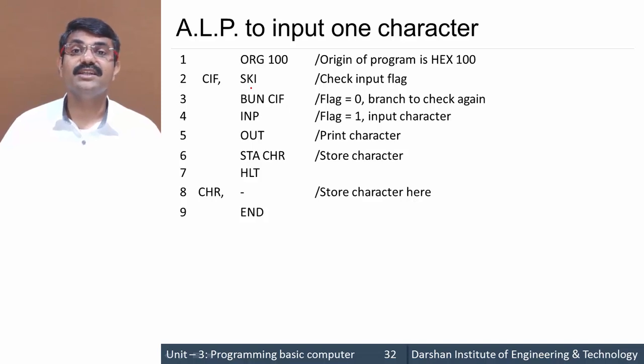SKI skips the next instruction on input flag - that means if the input flag is 1, then skip the next instruction. So this BUN will be skipped off. Consider that input flag is 1, so this is skipped and we would directly jump to the INP instruction.